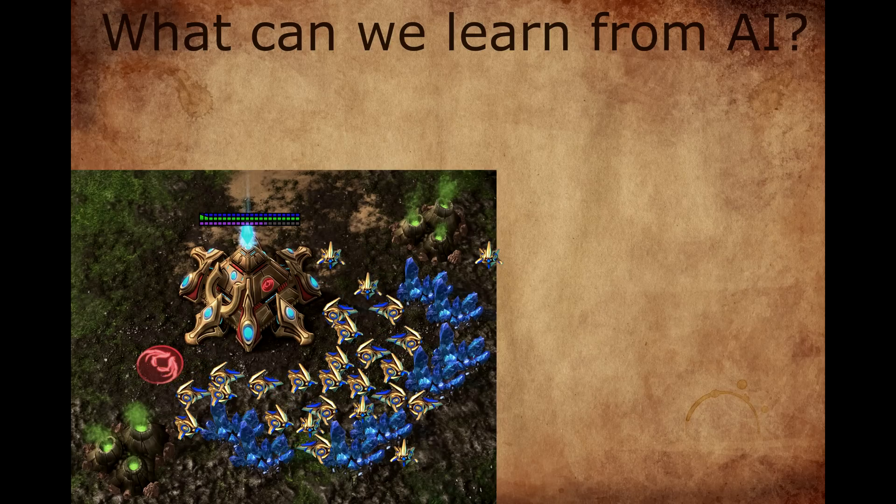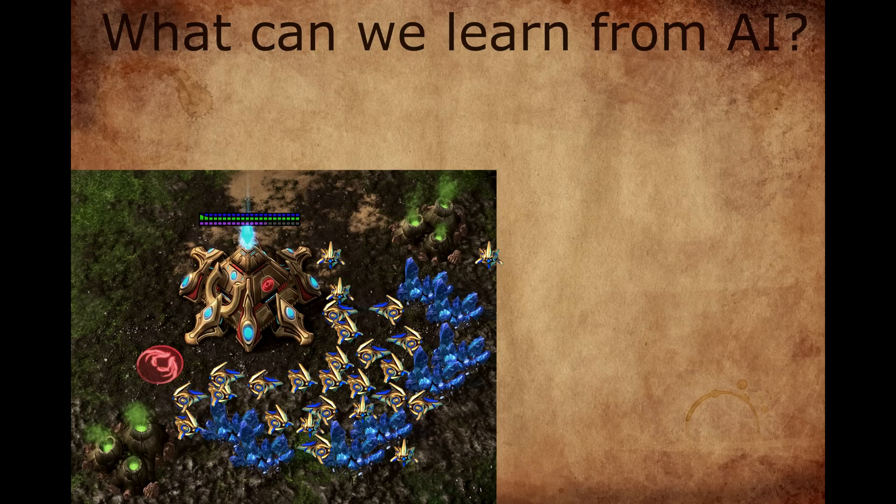AlphaStar is up to 25 or 26 workers. Why would it do this? Is the AI bad and making a poor play, or is there something deeper going on?